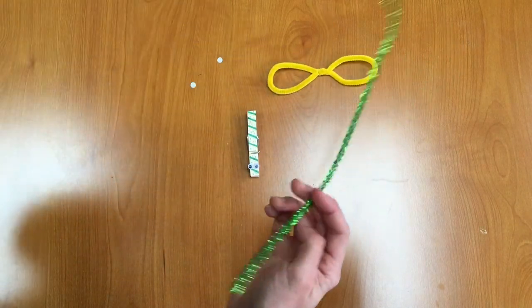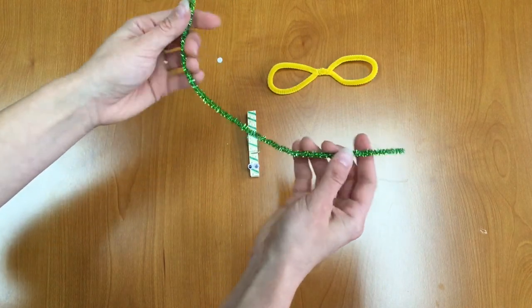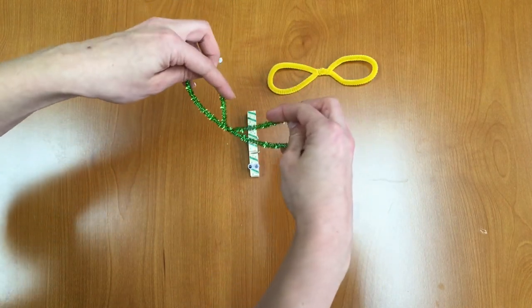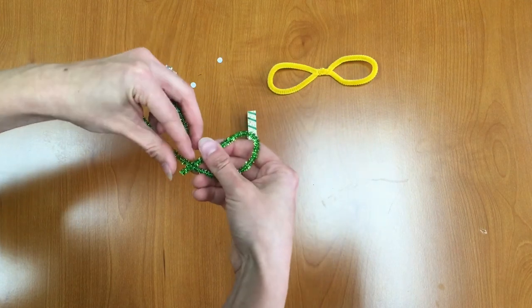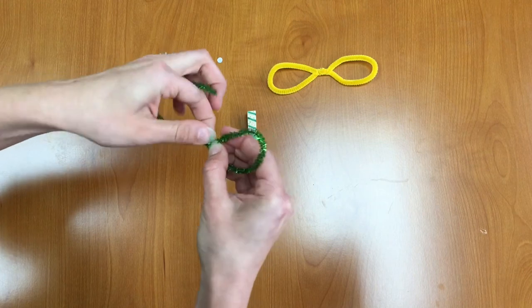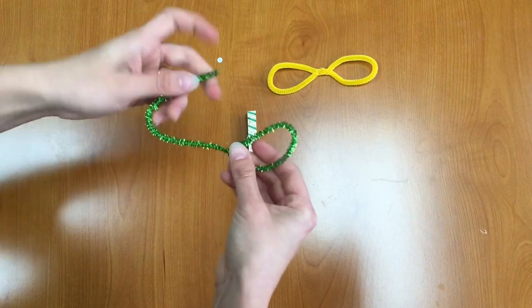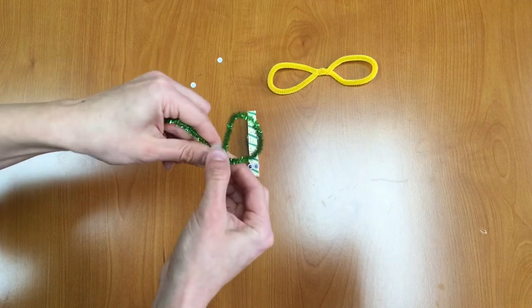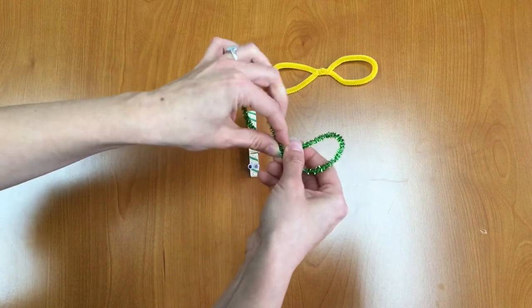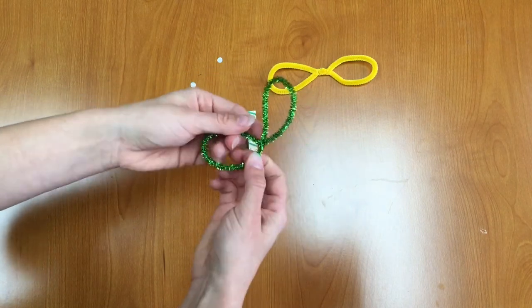And we're going to do the same thing with our other pipe cleaner. We're going to fold the ends in to the middle and twist those around. And you can do it one at a time if you want. That's all right to do. One and two. Nice and twisted. There we go.